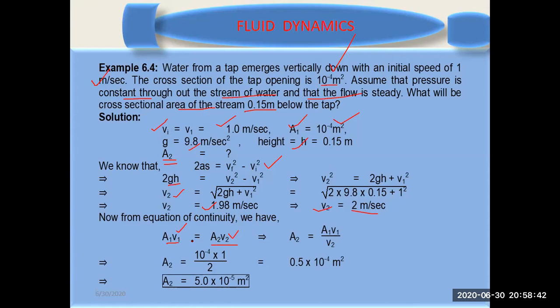So here, the area of projection, you are using this formula. After putting values you are getting 0.5 × 10⁻⁴ m². And here a₂ equals 5.0 × 10⁻⁵ m². So this is the value of area of projection.